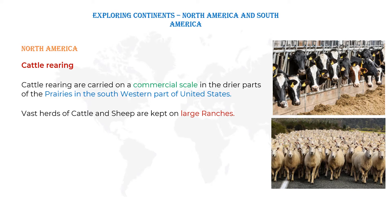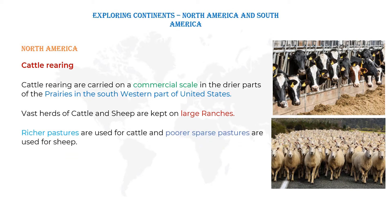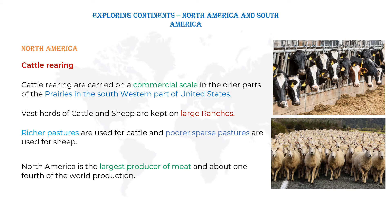Richer pastures are used for cattle and poorer sparse patches are used for sheep. Pastures means land used for grazing — large sized grazing lands are used to feed cattle like cows and bulls, and small sized sparse grazing lands are used to feed sheep. North America is the largest producer of meat, and about one fourth of the world production comes from here.